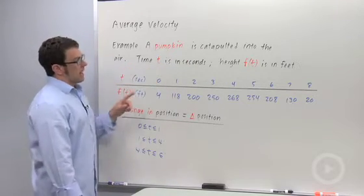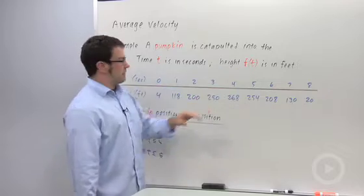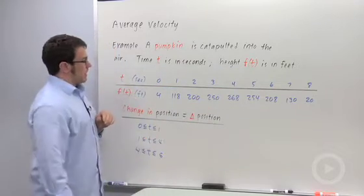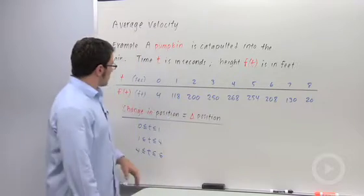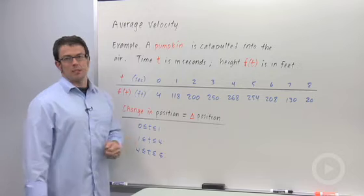Time t is in seconds, and the height of the pumpkin, f of t, is in feet. And it's given by values on this table. I've got values for t equals 0 to 8. Now I want to calculate some changes in position.